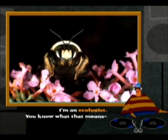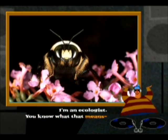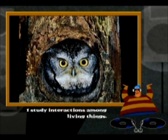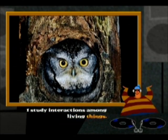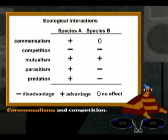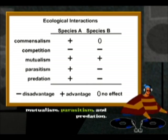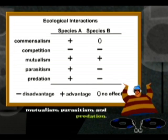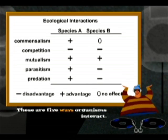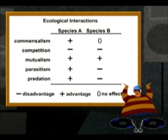Well, I'm an ecologist, you know what that means. I study interactions among living things. Commensalisms and competition. Mutualism, parasitism, and predation. These are five ways organisms interact.